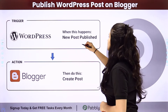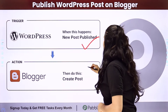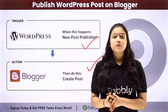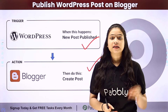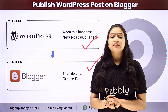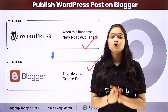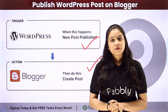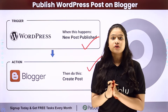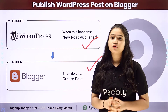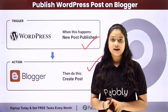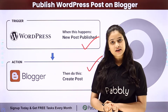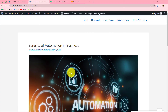We have WordPress in our trigger and Google Blogger in our action. We will connect both of them using Pabbly Connect so that whenever a new post is created and published on WordPress, automatically the same post will also be published on Google Blogger. Let me take you to my screen.